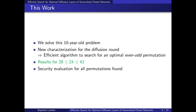What we did in this work is solve this problem, which had been open for 10 years, and we showed that this permutation was actually not optimal. To do so we provide a new characterization for the diffusion round, and especially this leads us to a very efficient algorithm to search for optimal even-odd permutations. This allows us to give new results for 28 up to 42 blocks. You can also check the paper for a quick structural security evaluation for all permutations we found.